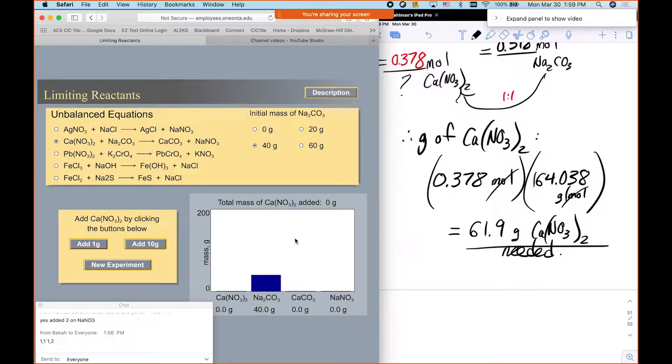So is everybody cool with that? Okay. So you need about 62 grams of calcium nitrate, and so let's add that many grams. So we've added 40 grams, 50 grams, 60 grams, 61, 62. So right around 62 grams. And then your other reactant goes away. Okay. So both of these have turned fully into products.